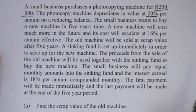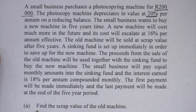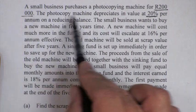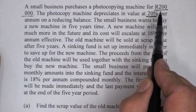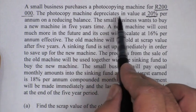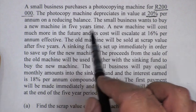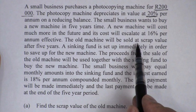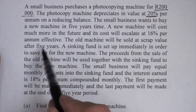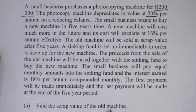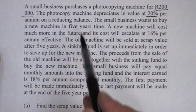Now that is a lot of information to consume. Let's read the first question and focus only on what it asks. The first question asks us to find the scrap value of the old machine. We are only going to focus on this first machine. This old machine was bought at a price of 200,000 Rand. It depreciates in value at 20% per annum reducing balance, and the small business wants to sell it after five years. The duration is five years.